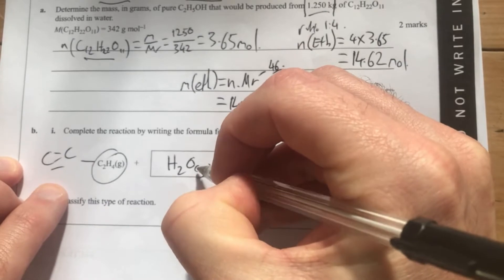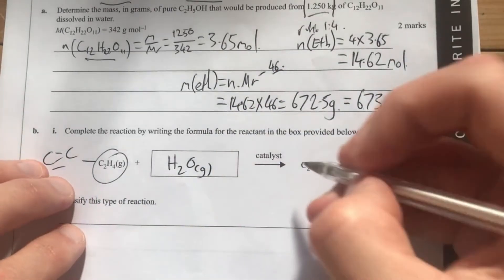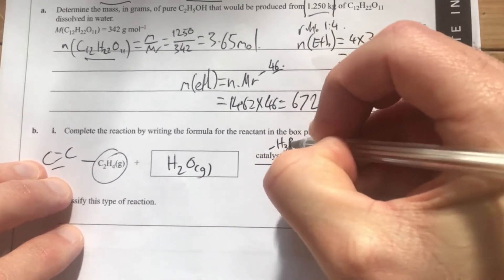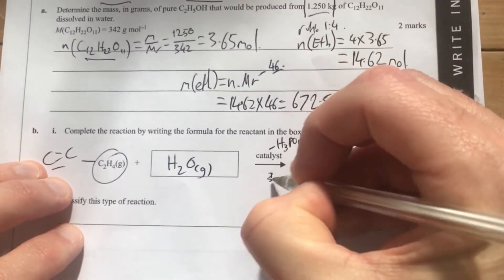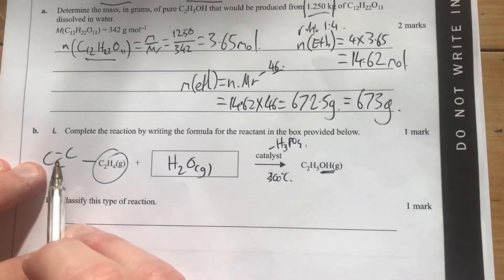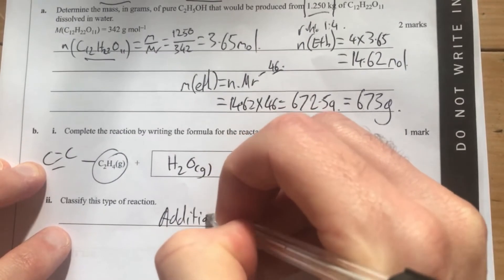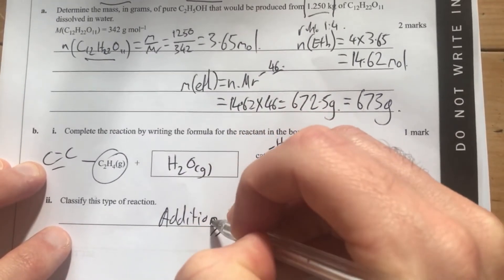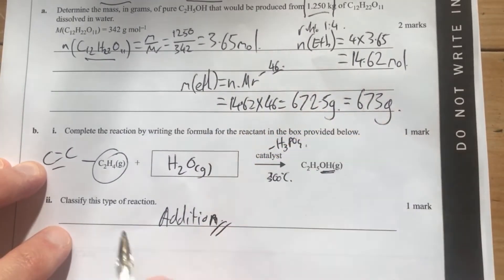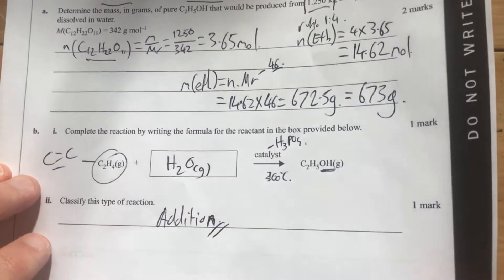It's probably going to be gas in this case here, because I know that this reaction from my chemical pathways occurs with a catalyst, which is H3PO4, and about 300 degrees Celsius. Because we're breaking our double bond, to classify the type of reaction, we're breaking a double bond so this will be an addition reaction.